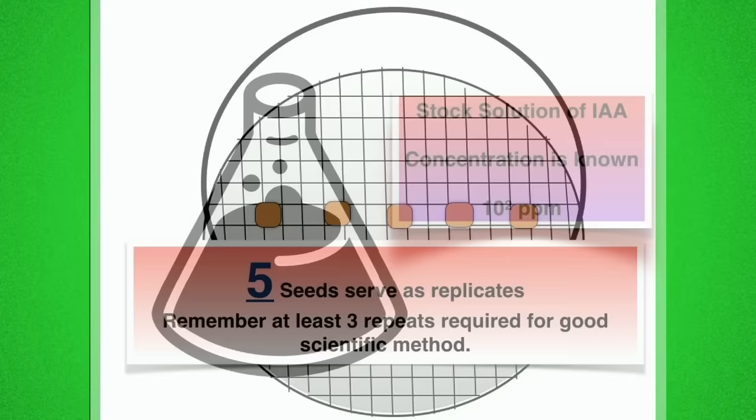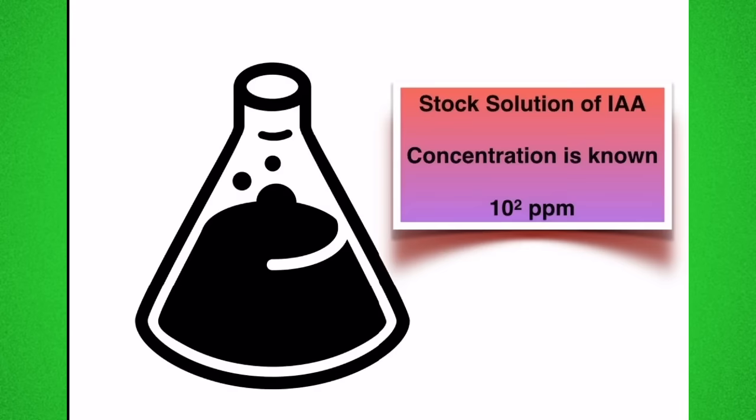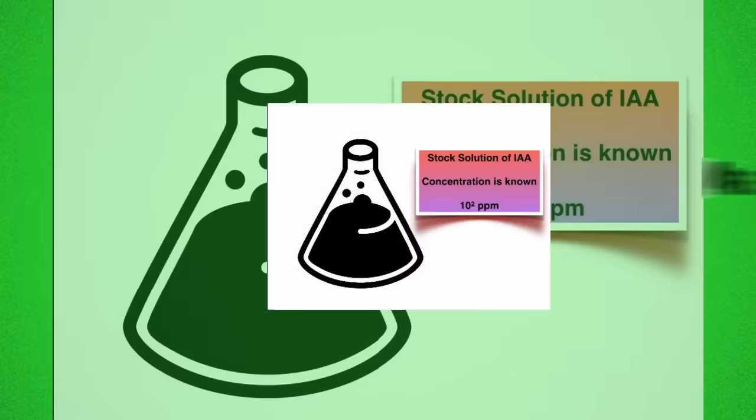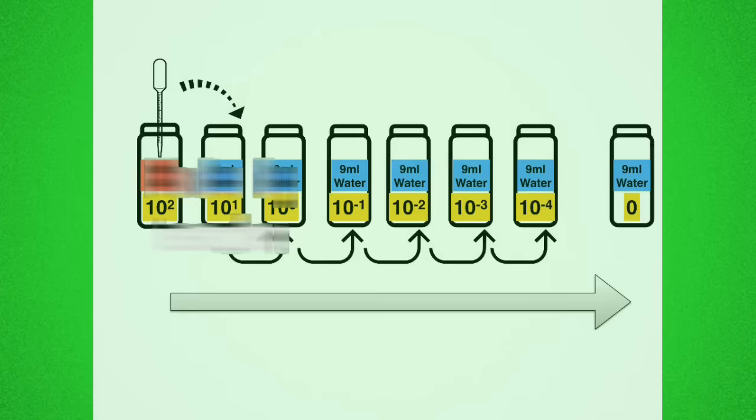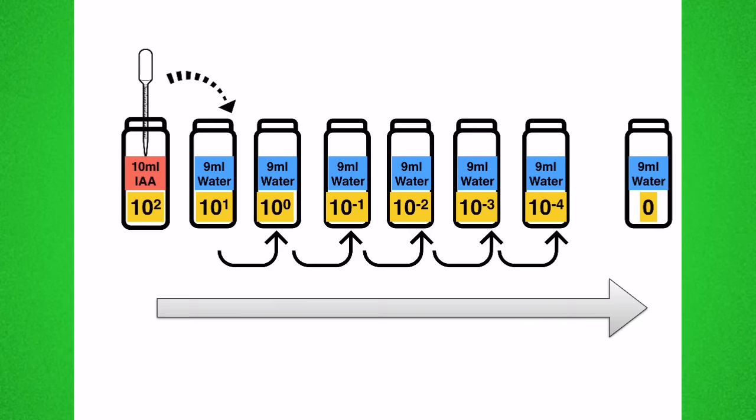The IAA stock solution is the most important part of the practical. It's a stock solution because you know its exact concentration. It's ten to the two parts per million. The stock solution was made up by your teacher. Eight identical bottles were gathered and labelled as shown. In the first bottle ten mils of the stock solution was placed and into the seven other bottles nine mils of distilled water.